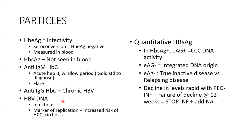High DNA levels increase the risk of HCC, chronic liver disease, and cirrhosis. Quantitative HBsAg levels — when surface antigen and E antigen are positive — reflect cccDNA activity. If IgM is negative, it indicates an integrated DNA origin. HBsAg levels have been seen to reduce with pegylated interferon therapy, and if there is no response at the end of 12 weeks, we stop and change to other drugs.